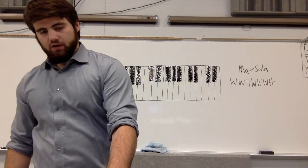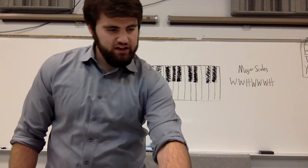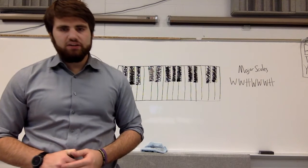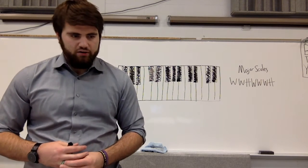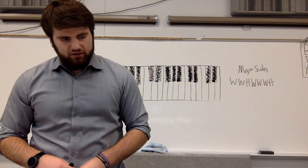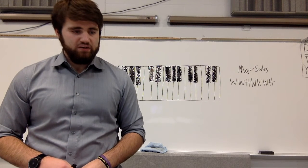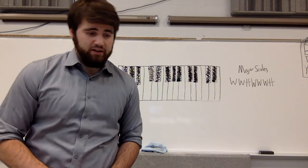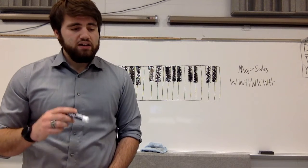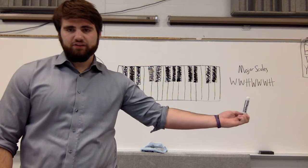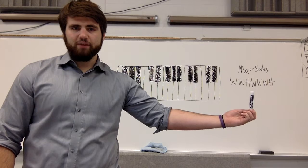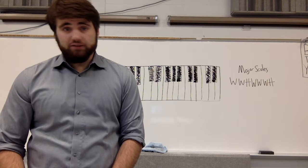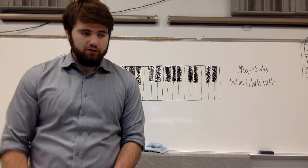Then do the same thing for C sharp. Now flip over to the next page — we just basically have more practice. The first thing you need to do on the next page is write the whole-whole-half pattern in question one. On page 41, in the bottom right corner, you basically write this pattern — that's the answer. None of you should get that wrong. If you do, you haven't been doing the homework.